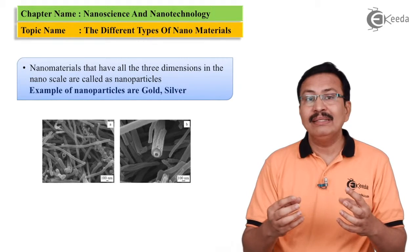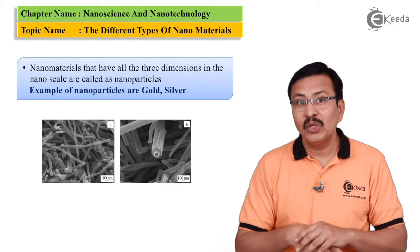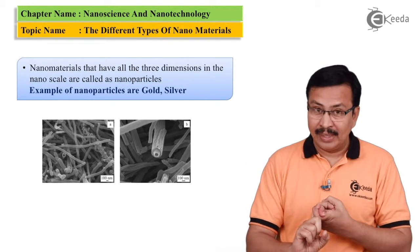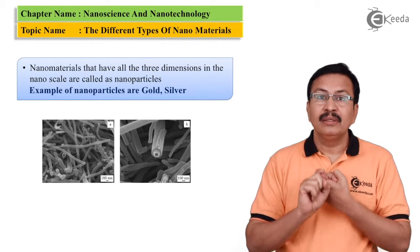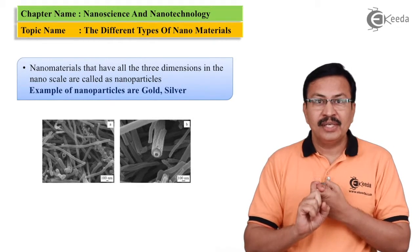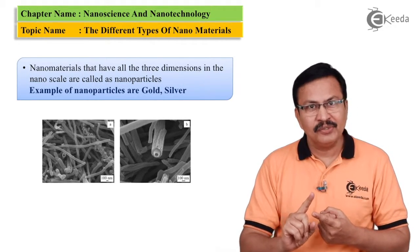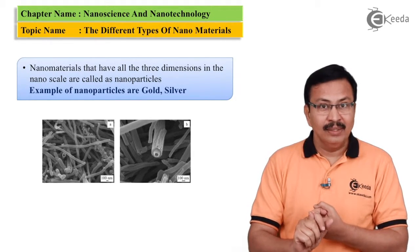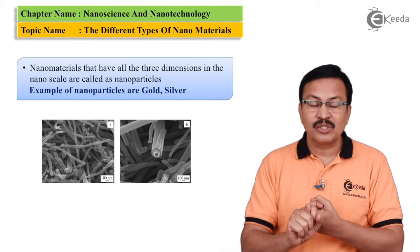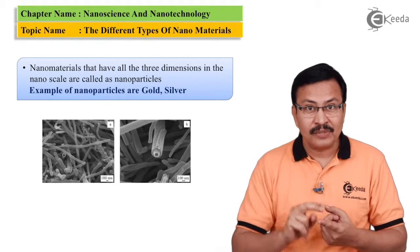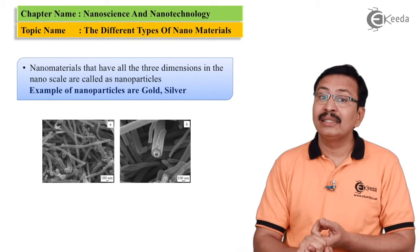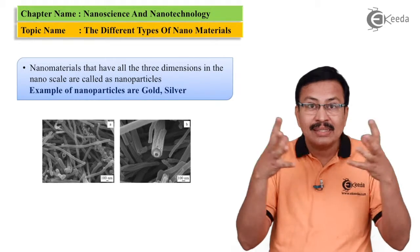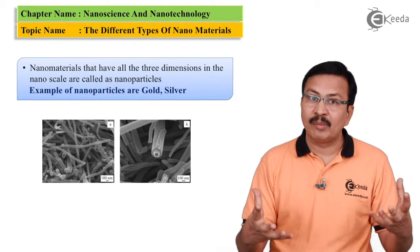Here we complete the categorization of nanomaterials. Basically: nanolayers, wherein the nanoscale extends only in one dimension; nanowires, wherein the nanoscale corresponds to two dimensions; and finally, nanospheres, wherein the nanoscale is extended in all three dimensions.